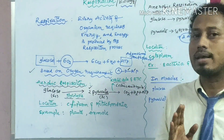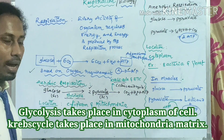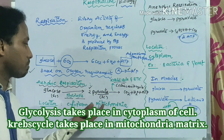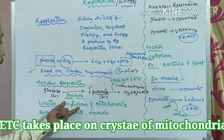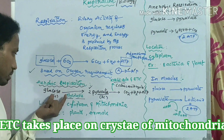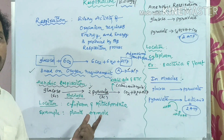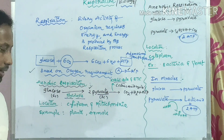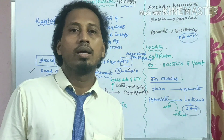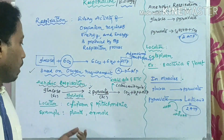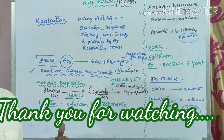Regarding location: if asked about location, the answer is every cell's cytoplasm and mitochondria. Cytoplasm is where the first process, glycolysis, occurs. In the mitochondria, the Krebs cycle and electron transport chain take place. Examples include plants and animals — all eukaryotic organisms and mitochondria-containing organisms will have aerobic respiration.